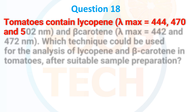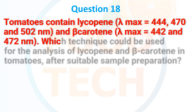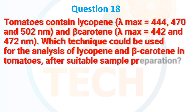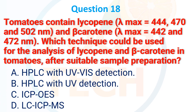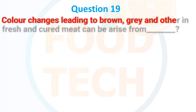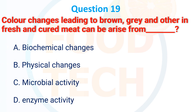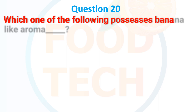Tomatoes contain lycopene and beta-carotene. Which technique could be used for the analysis of lycopene and beta-carotene in tomatoes after suitable sample preparation? A. HPLC with UV-visible detection, B. HPLC with UV detection, C. ICP-OES, D. LC-ICP-MS. The correct answer is A: HPLC with UV-visible detection. Color changes leading to brown, gray, and other hues in fresh or processed food can arise from: A. Biochemical change, B. Physical change, C. Microbial activity, D. Enzyme activity. The correct answer is microbial activity.